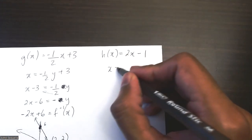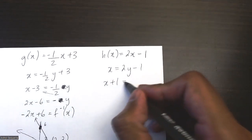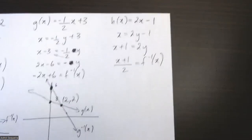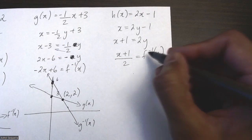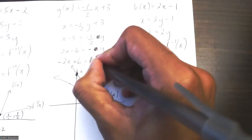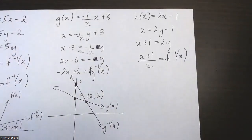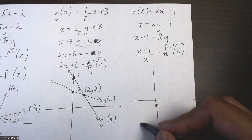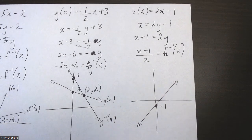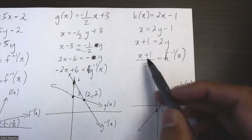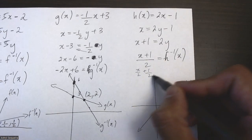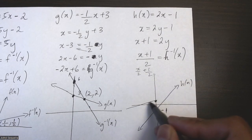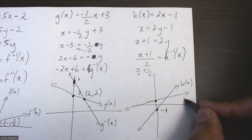For the third example, h(x) = 2x minus 1, I flip x and y to find the inverse, move minus 1 to the other side, then divide by 2, giving h inverse of x equals x/2 plus 1/2. For the sketch: the original has a y-intercept of negative 1 and slope of positive 2, so it's steep. The inverse has a y-intercept of 1/2 and slope of 1/2, so it's more flat.